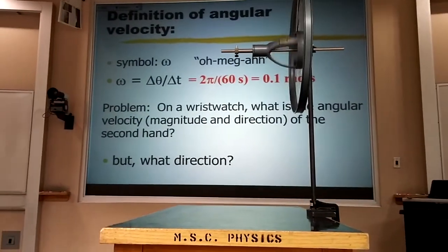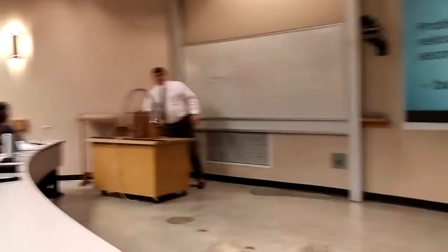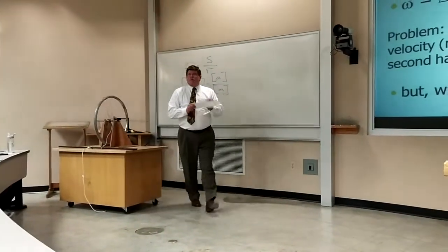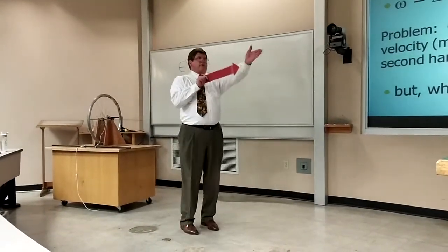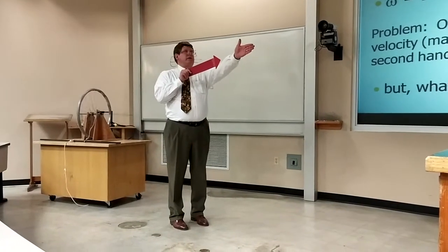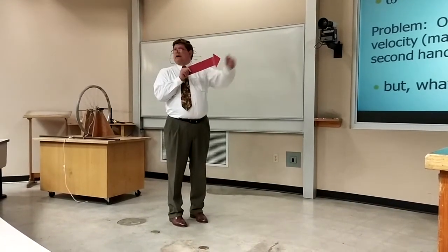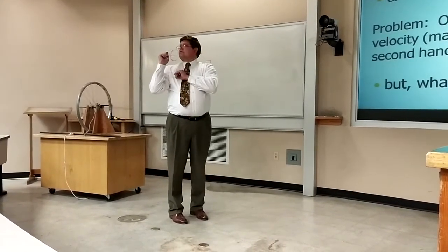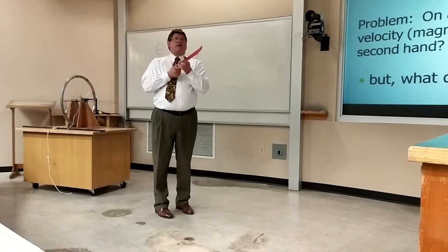Now, with linear velocity, we used a vector. And it was very simple to do. It was out our front windshield if we were going down the road in a forward direction. If we were in reverse, it was out the back windshield. It was the direction we were going.